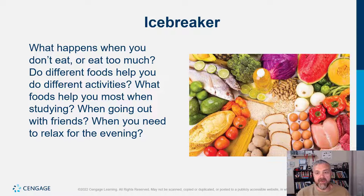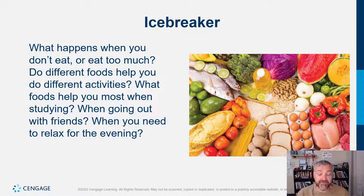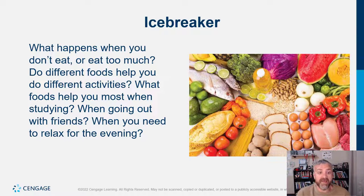Basically your body is always eating. Whether you ate an hour ago or haven't eaten in 24 hours, it doesn't matter at the cellular level, because your cells are constantly eating — constantly breaking down fuel because they constantly need energy. The question is: is the energy you're using right now coming from your GI tract because you just had breakfast? Or is it coming from body fat stores, or from muscle or liver glycogen?